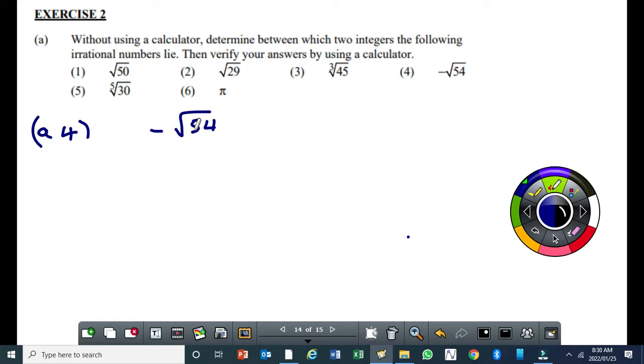Now, because here we have got a negative square root of 54, means when I'm going to work this out, I have to write it as square root of 54, then I put a negative there. It's less than square root of minus 54. Then, which perfect square is less than 54 but close to 54?